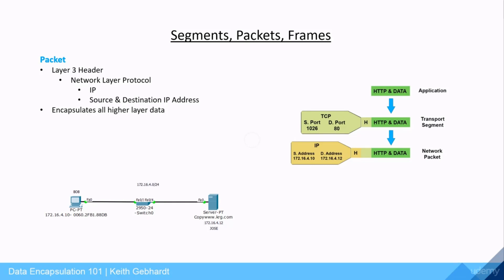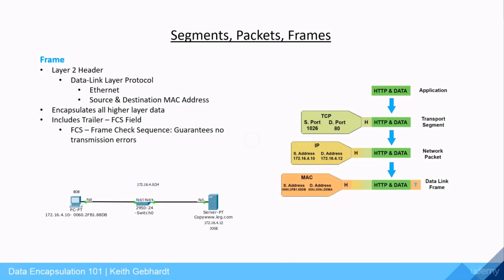The source and destination IP addresses never change during our data communication process. The last step in encapsulation is our Layer 2 frame, which uses the Ethernet protocol with source and destination MAC address information to fill the header. The source MAC is from the sending device and the destination MAC is from the device receiving the frame. The frame also receives a trailer containing an FCS field — Frame Check Sequence — which guarantees there were no transmission errors as data traverses the network.